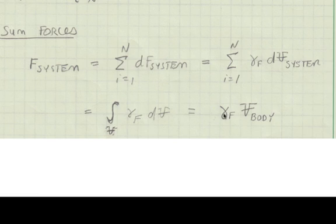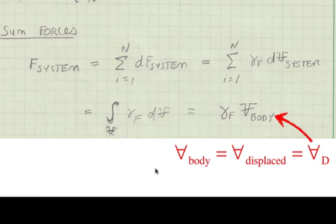Since specific weight is assumed to be constant, it can come out of the integral, and we're left with the integral of differential volume over volume. So the final result is the force on the body, or the force on the finite system, is the specific weight of the fluid times the volume of the body. Now it's conventional, instead of using volume of the body, to write this as volume displaced, or v subscript d, as shown here.